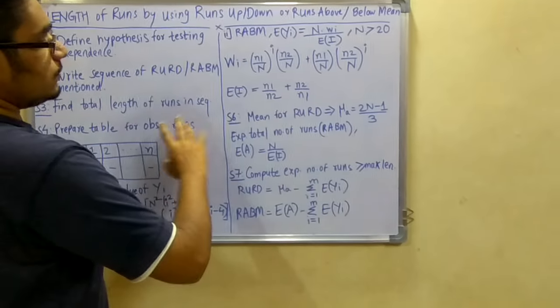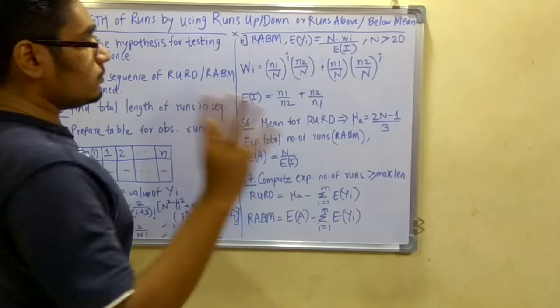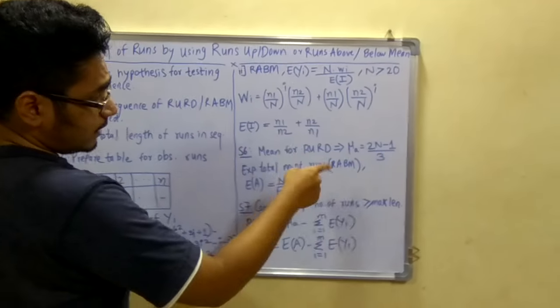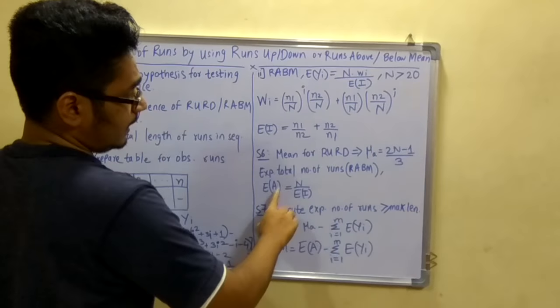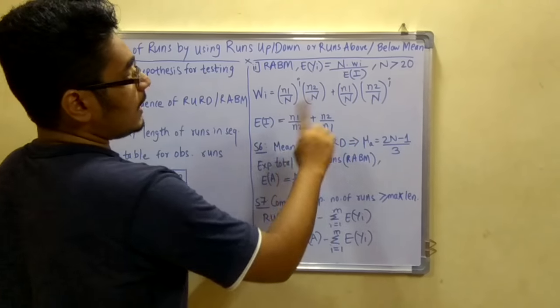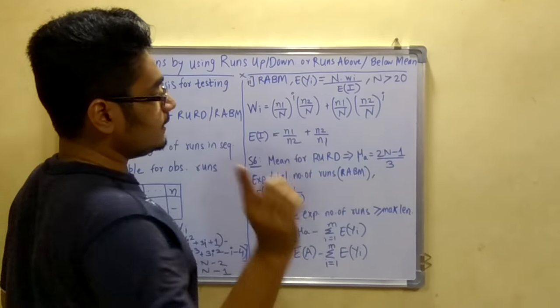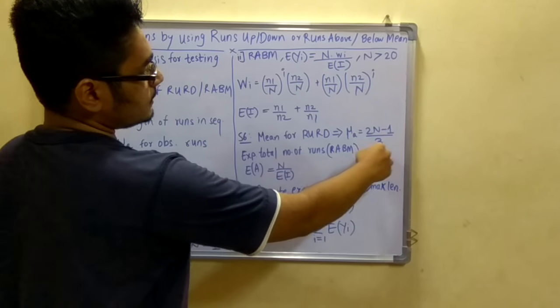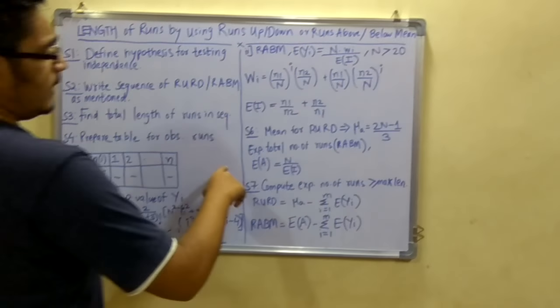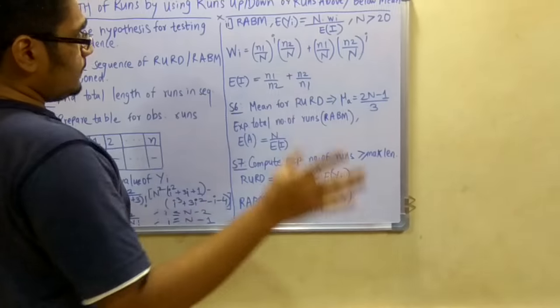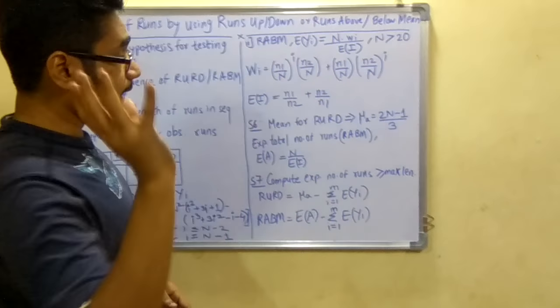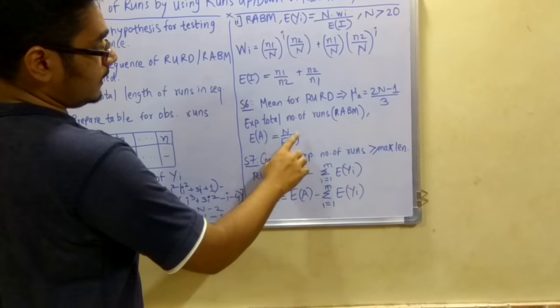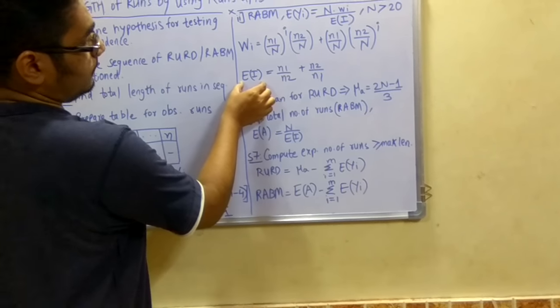Next, the sixth step: we have to calculate mean for runs up runs down and expected total number of runs (that is EA) for RABM. For RURD you will calculate the mean from the previous algorithm as 2(n - 1)/3 as you remember. Next for RABM you will calculate the expected total number of runs: EA equals n divided by ei. You can get ei from here.